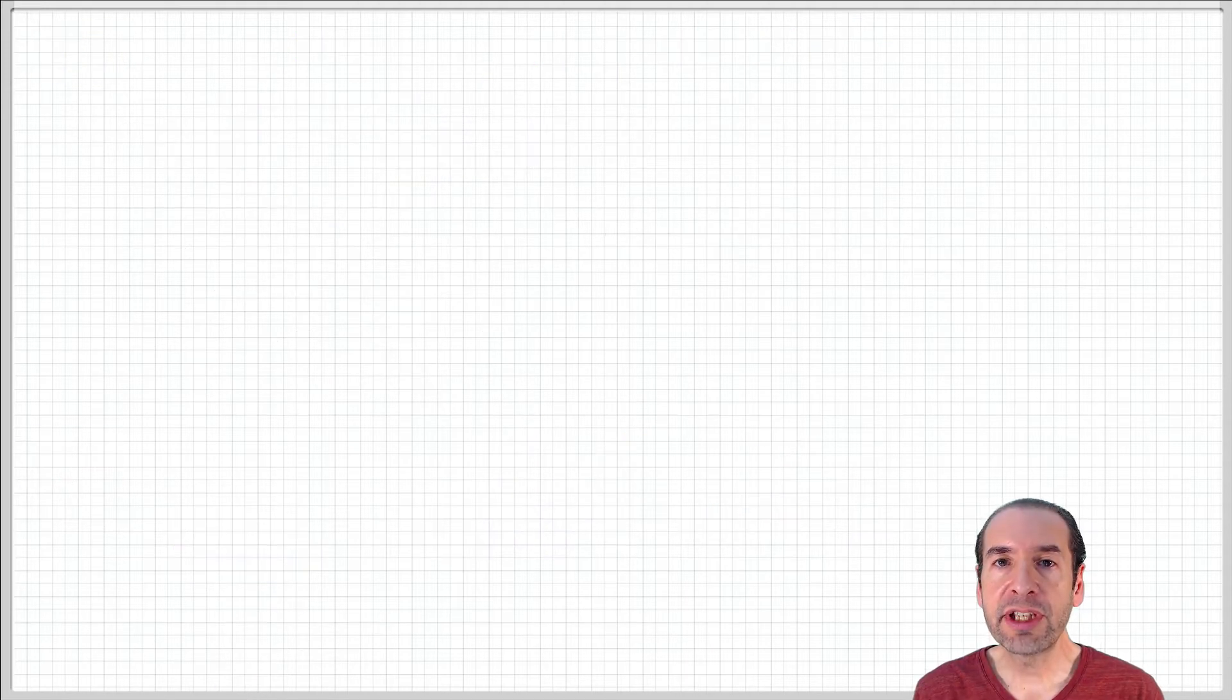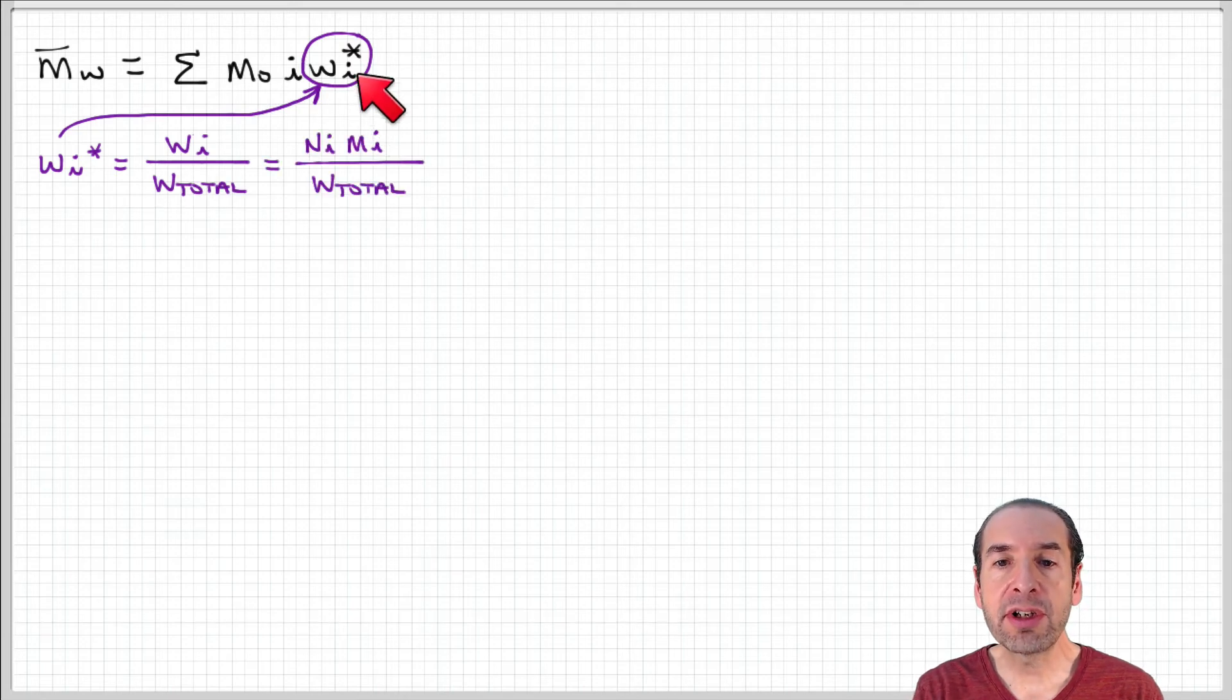Let's take a closer look at this equation for the weight average molecular weight, and in particular, this term that expresses the weight fraction of polymers that have a length I. That's going to be important for us to determine.